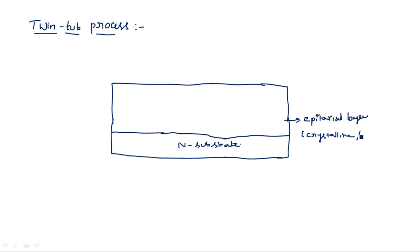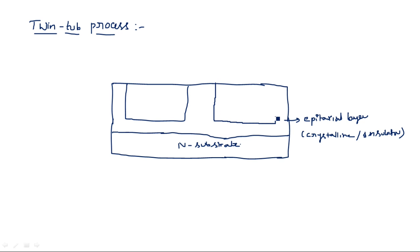The epitaxial layer is formed by subjecting the N-type substrate to high temperature to create a crystalline structure, which acts as an insulator. On this insulator, two tubs are created: the first tub is one well, and the second tub is the other well. So one will be the N-well and another will be the P-well — hence the name twin-tub. These two tubs are created on a single epitaxial layer that was formed on an N-type substrate.